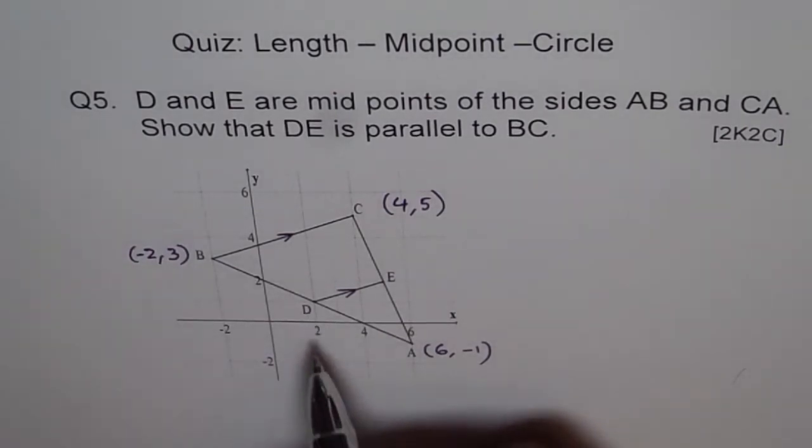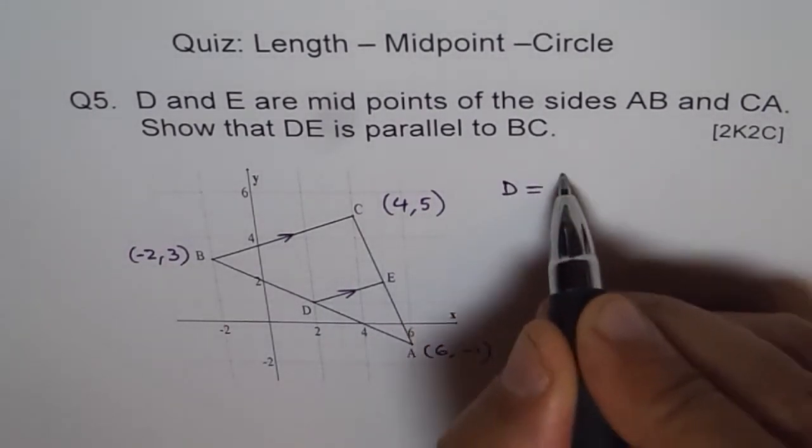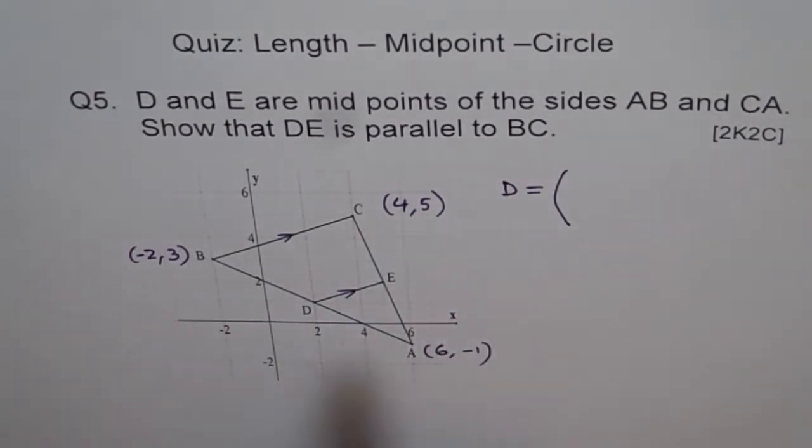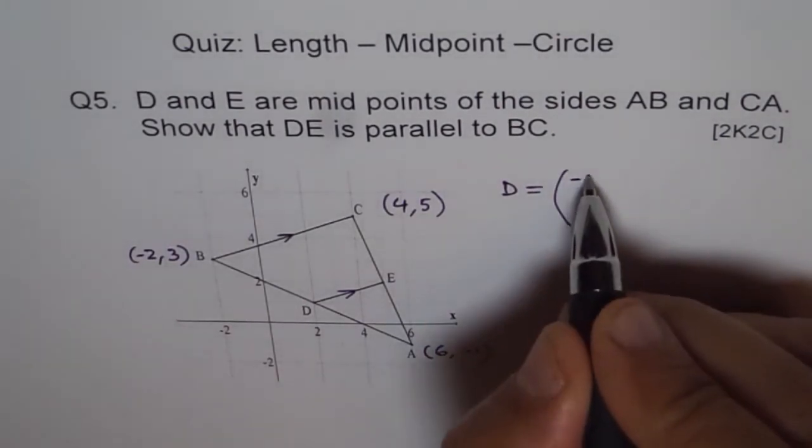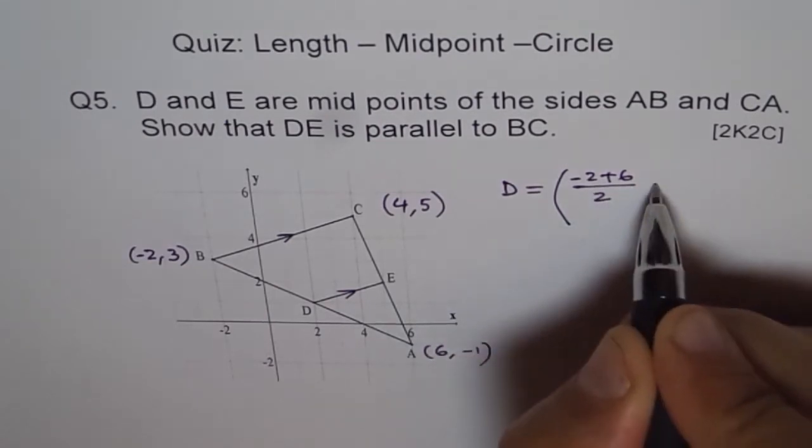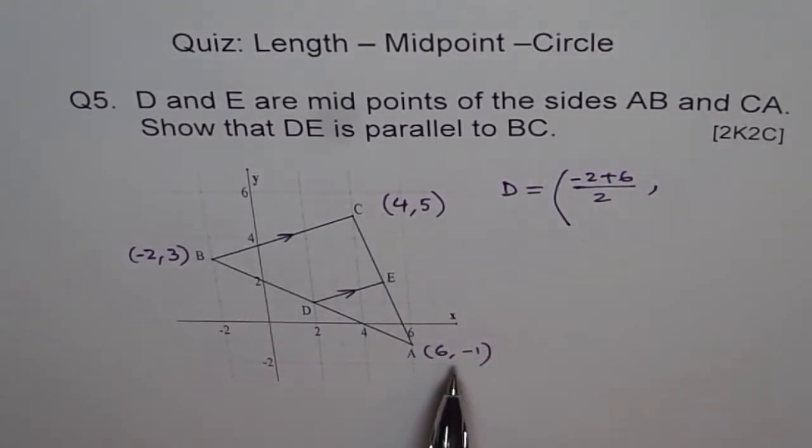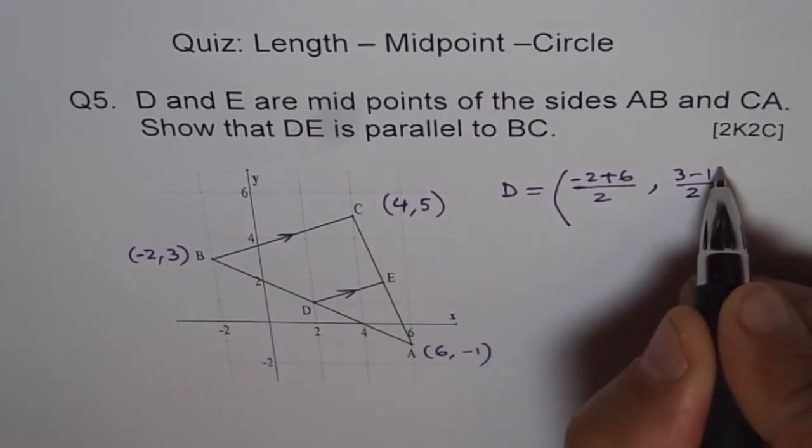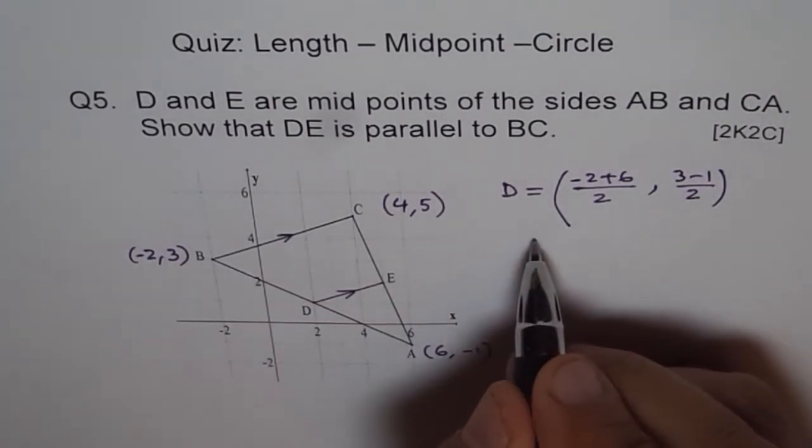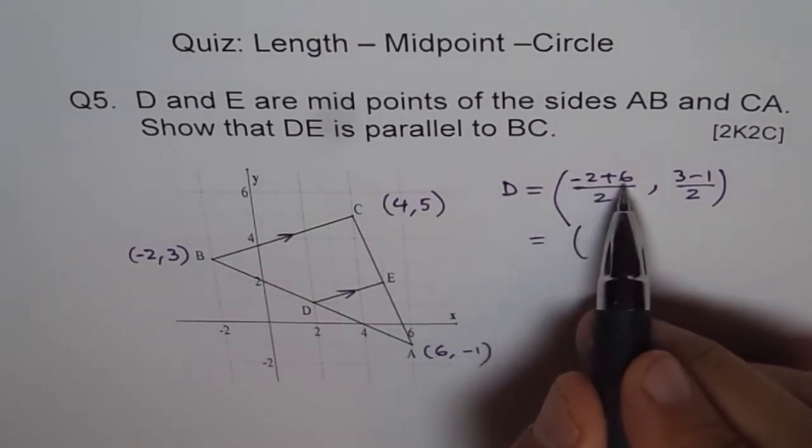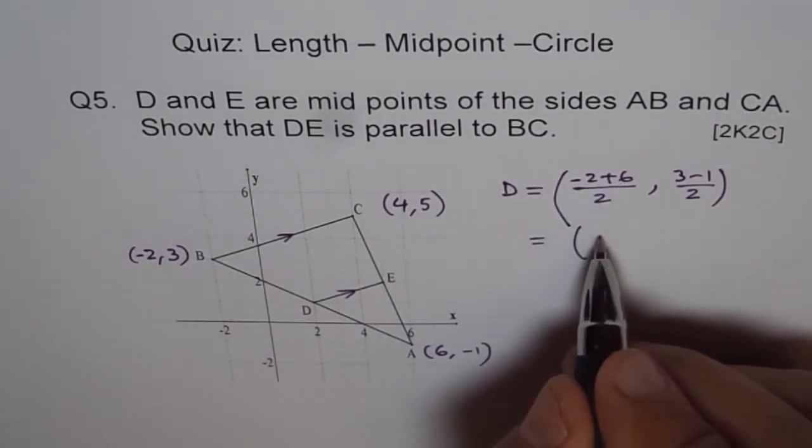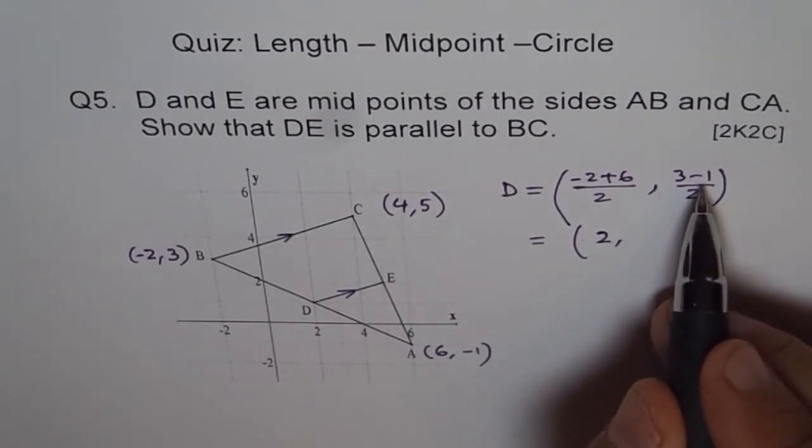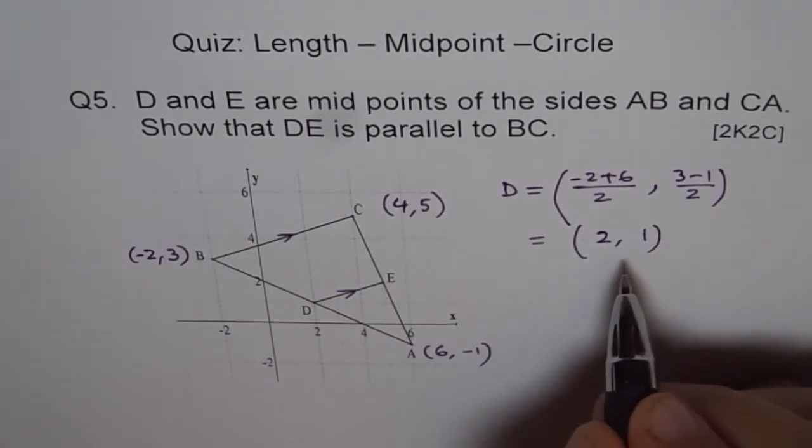Now we need to find D. So D is midpoint of AB. So D equals the midpoint of A and B, which is (-2 + 6) divided by 2 for X value and (3 + (-1)), which means 3 minus 1, over 2 for Y value. Which gives us D as -2 + 6 is 4, 4 divided by 2 is 2. 3 minus 1 is 2, 2 divided by 2 is 1. So D is (2, 1).